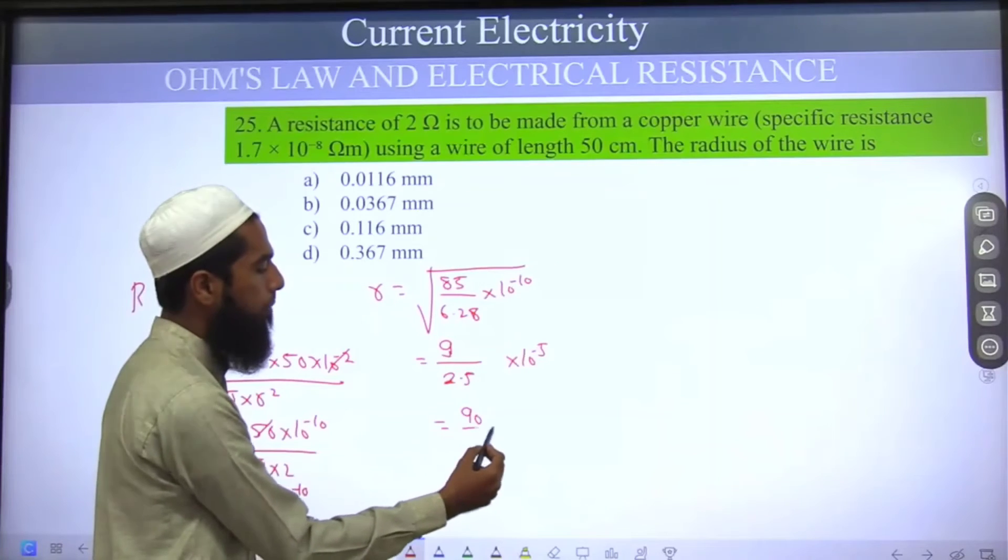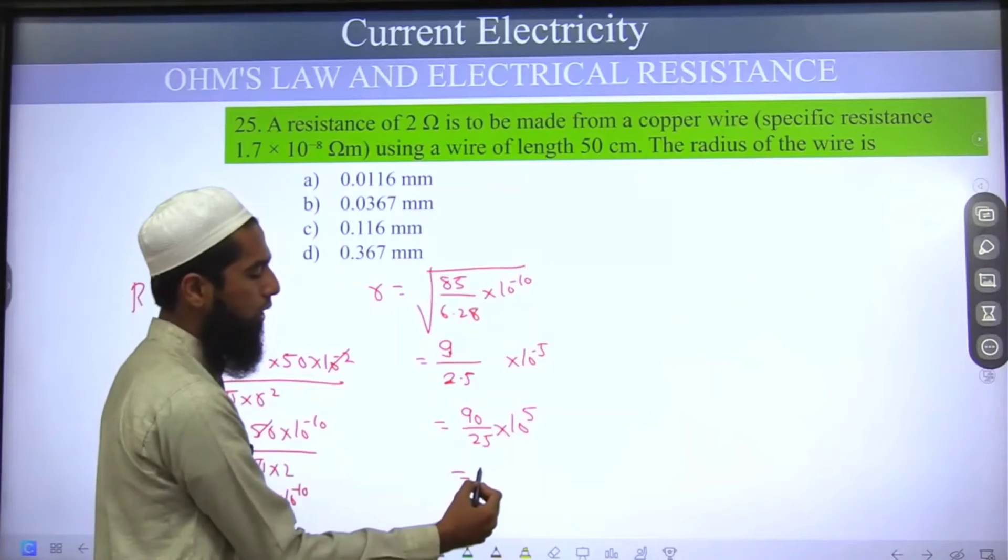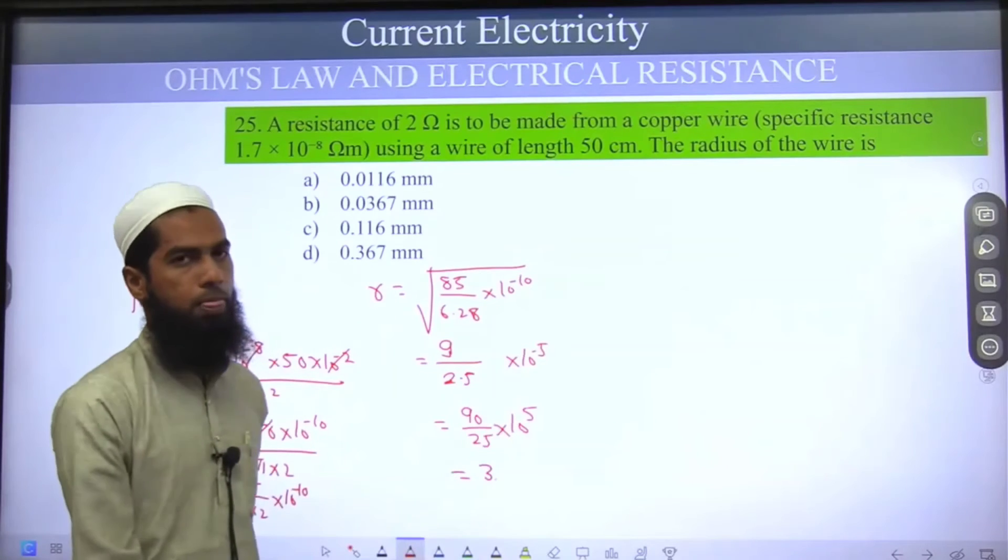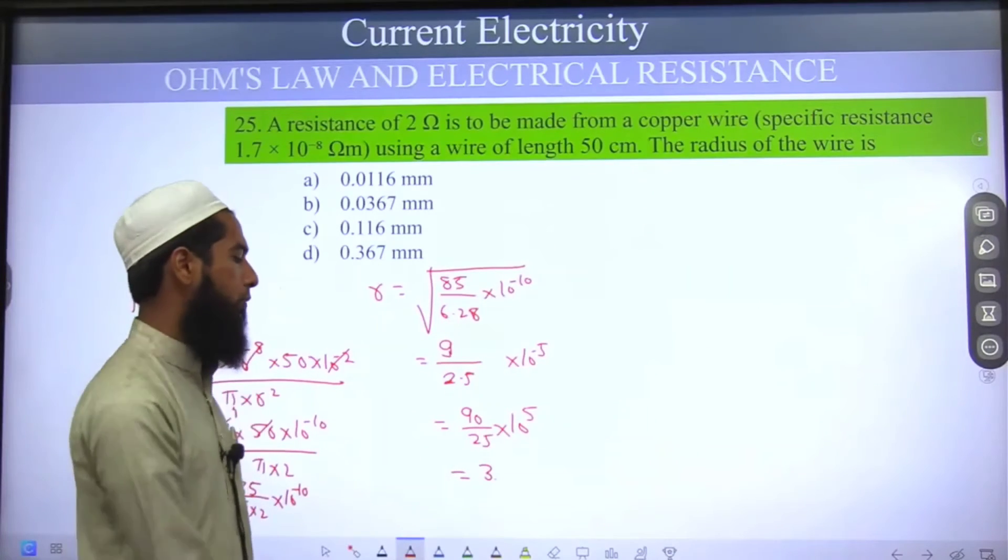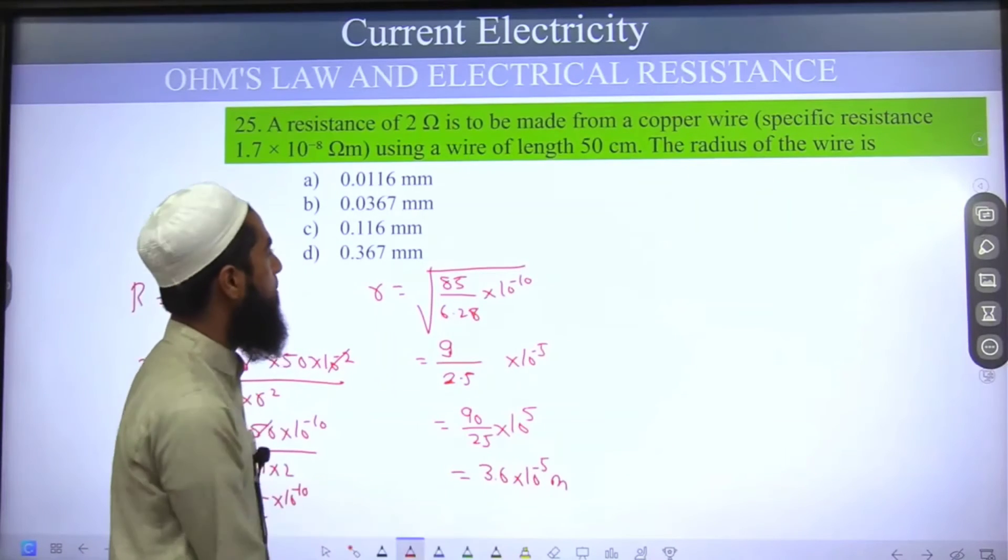So it becomes 90 by 25 into 10 power minus 5. 25 into 3, giving us 15 remaining. So 6 into 25 gives 3.6 into 10 power minus 5 meter.